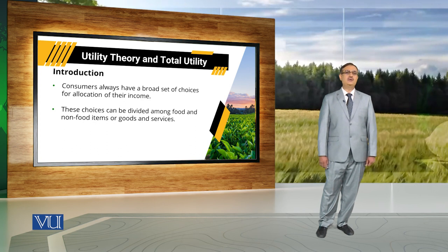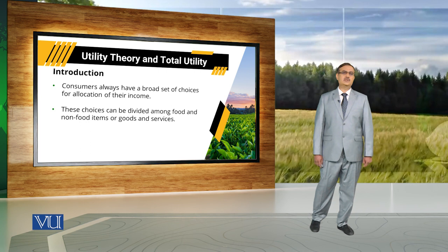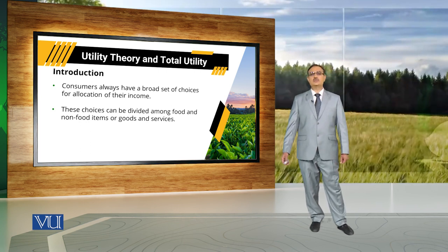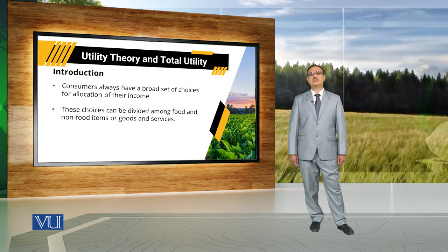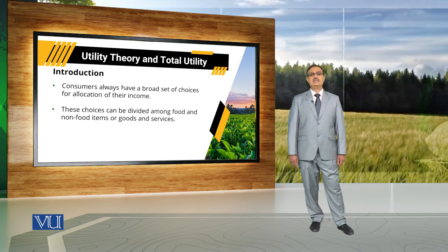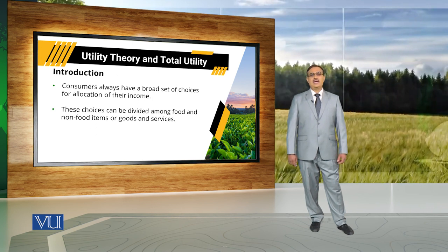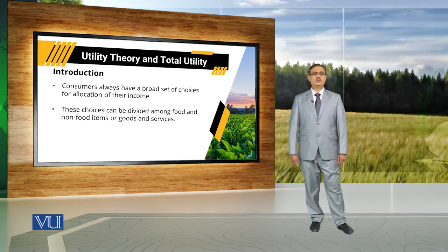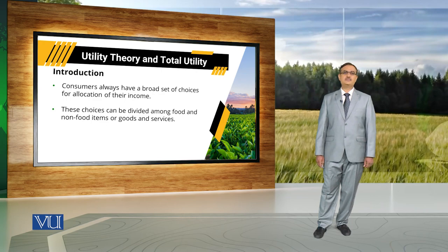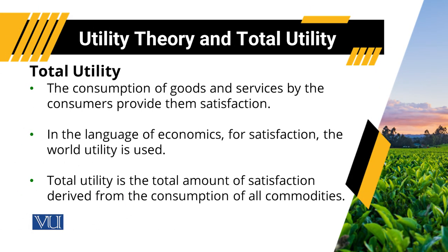For example, if a consumer is getting services of a barber, the barber is performing a task for the consumer. Similarly, someone might get services from a doctor to get a prescription to cure himself from different diseases. The important thing is that the consumer always uses a good to get satisfaction, and the consumption of goods and services always provides a certain level of satisfaction.